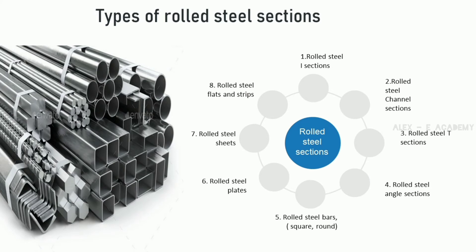Structural steel sections are available in a variety of shapes and sizes. Rolled steel I-sections, the most common, are used as beams. Rolled steel channel sections are used as connections in truss sections. T-sections are used as hanger connections. Angle sections come in equal and unequal types. Bars are either square or round. Additionally, rolled steel plates, sheets, flats, and strips are other available sections, all available in the market in a variety of sizes.